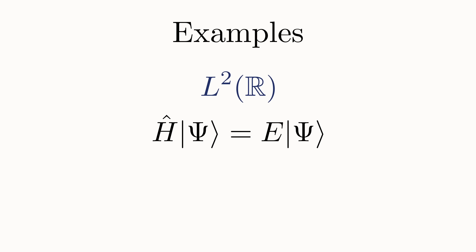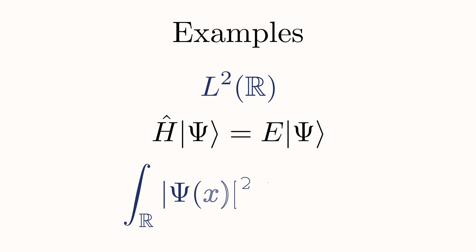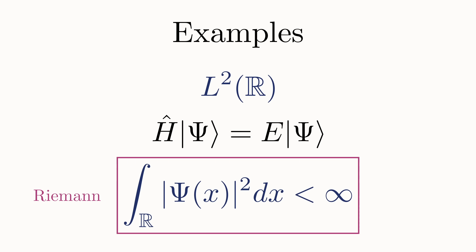Yet another extremely important example is Schrödinger's wave function in quantum mechanics. The wave function describes the state of a physical system and lives in a related Hilbert space defined over all real numbers. Interestingly, if this uses the run-of-the-mill Riemann integral that most of us are more familiar with, there will be sequences that converge to something outside of the space. In order for this space to be complete, and thus actually be a Hilbert space, the integral here needs to be the more versatile Lebesgue integral.